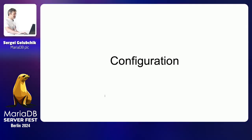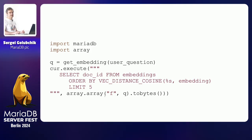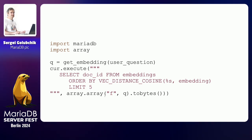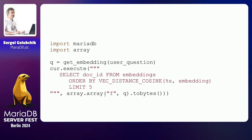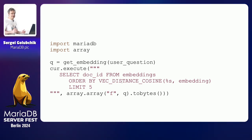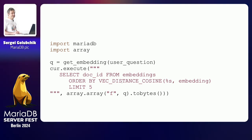Question: you define the vector to be cosine already in the index, so why do you also need ORDER BY in the query? Answer: because if it weren't cosine it would still work, but it would not use the index. If you use a function that the index was not built with, it will work but won't use the index. There are plans to automatically infer the distance function.